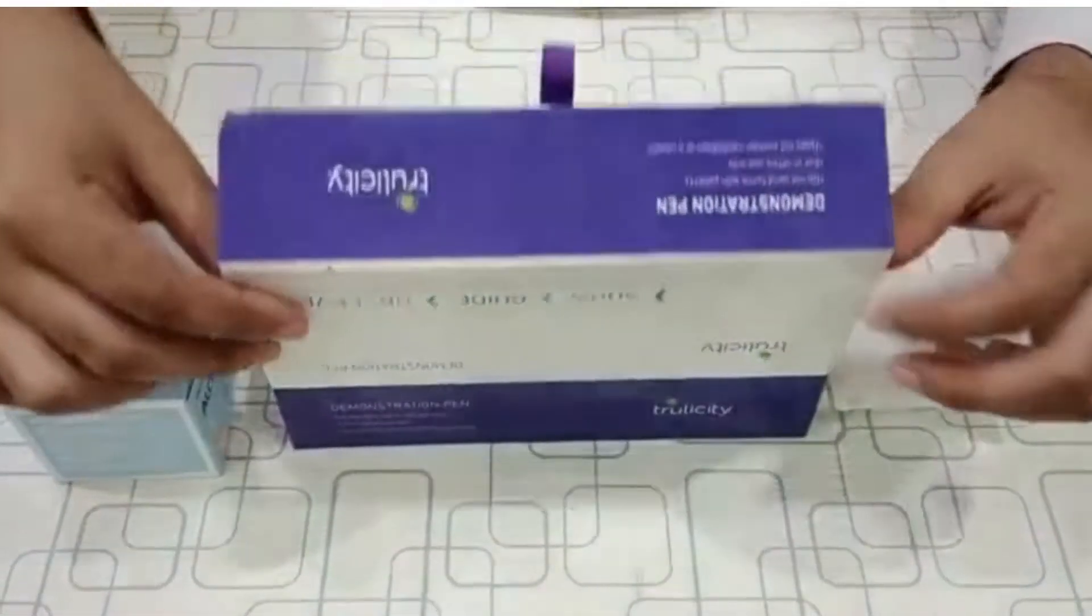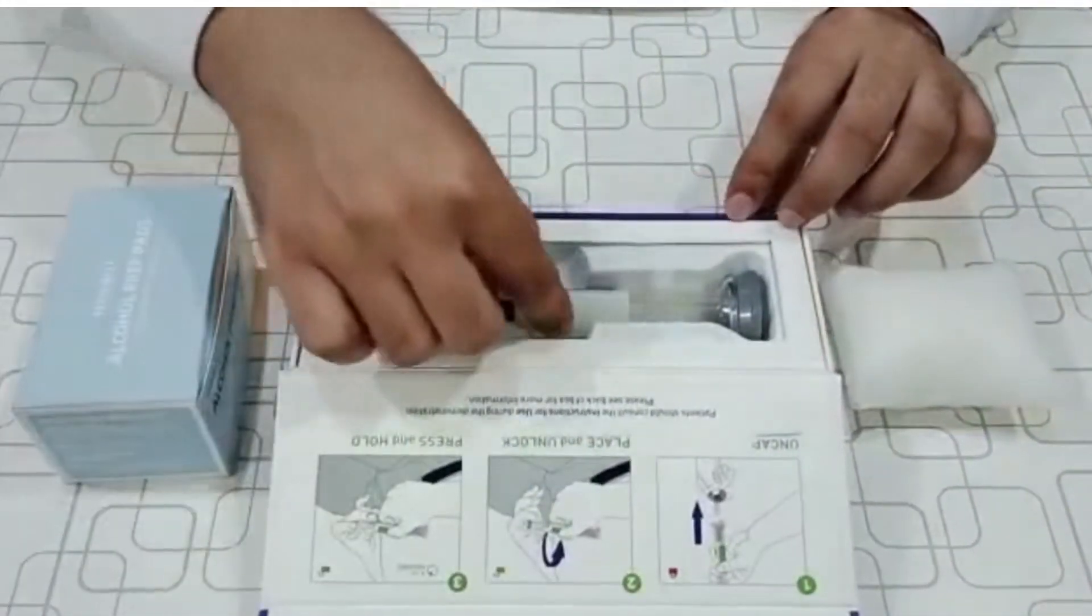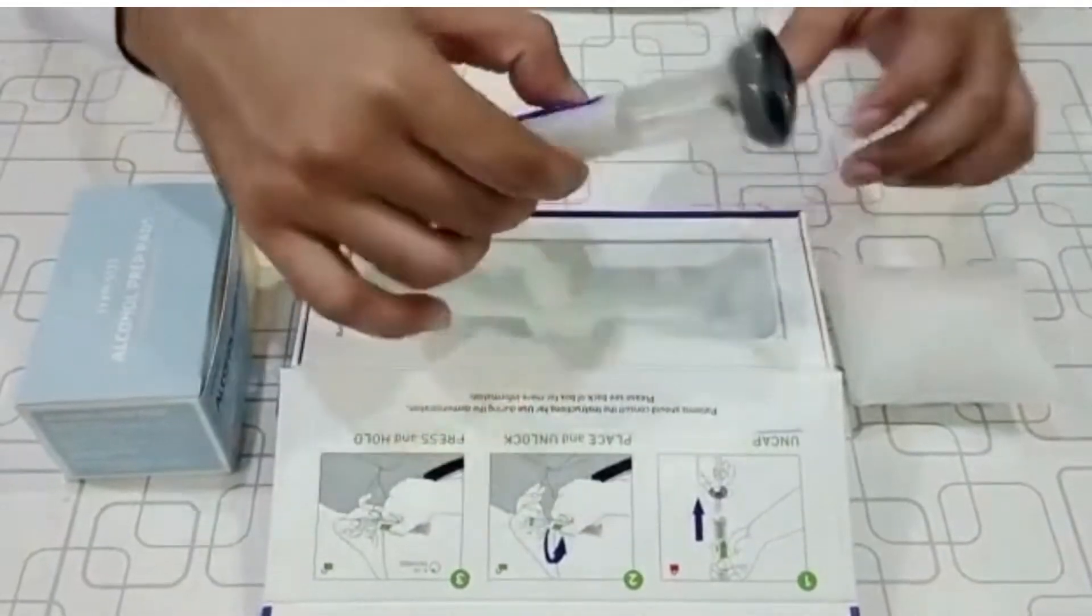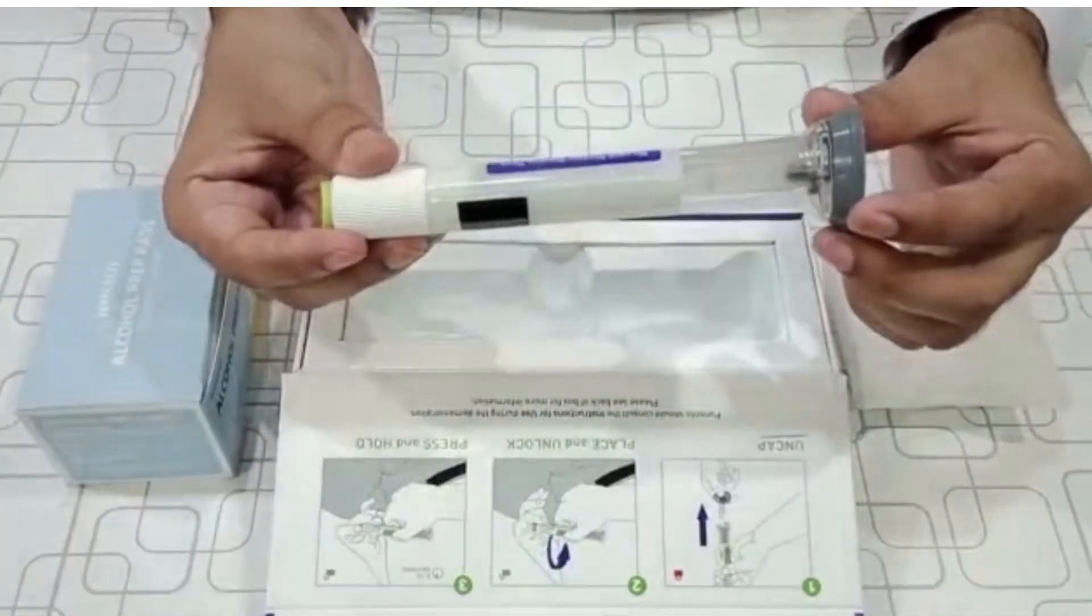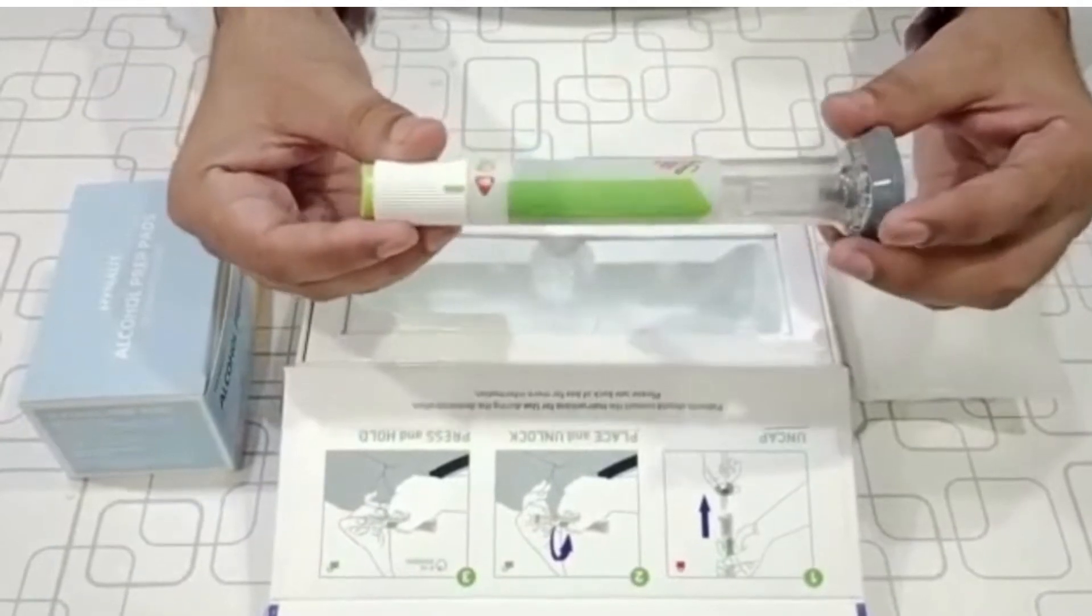Hi, in this video I am going to talk about how to use Trulicity Pen. This is a once weekly dose medication and contains an antidiabetic drug dulaglutide, which is GLP-1 receptor agonist.